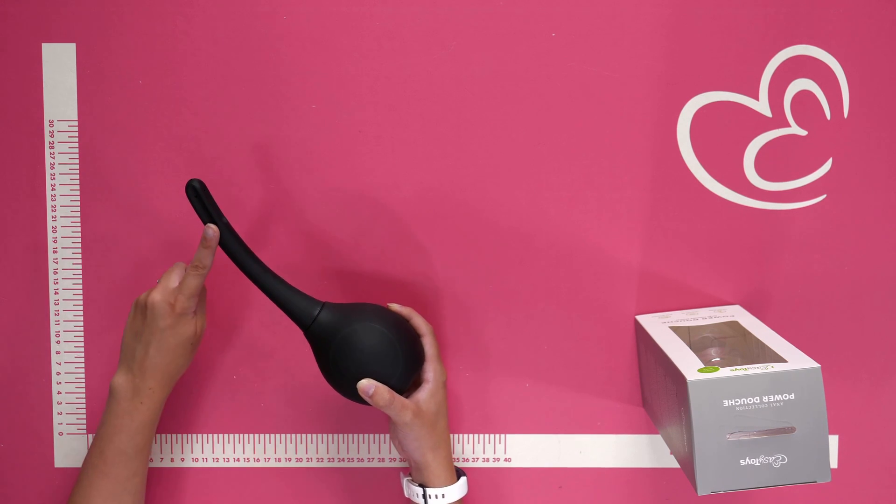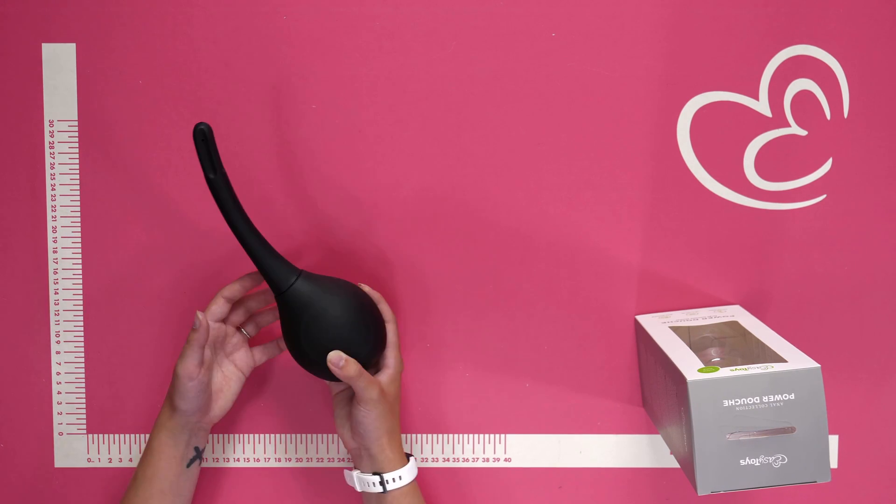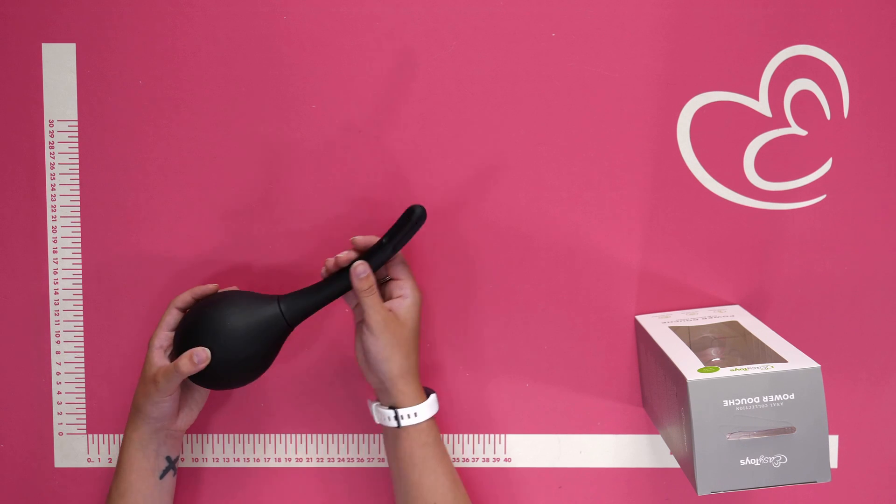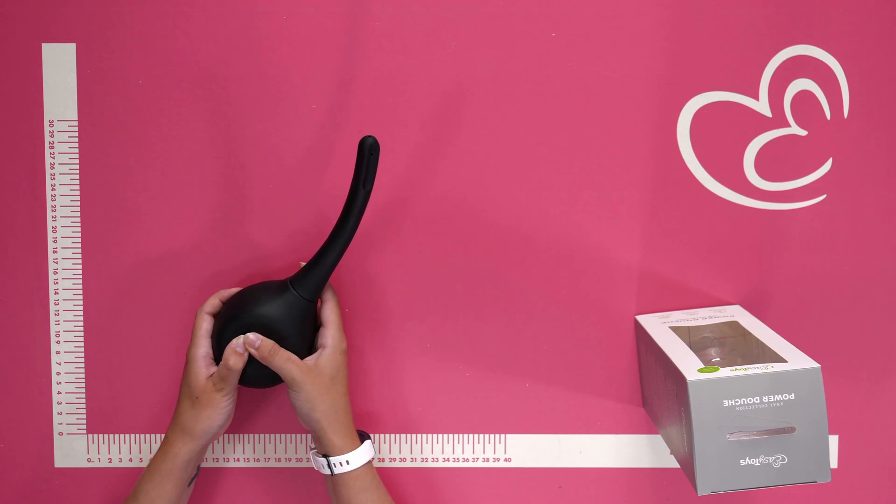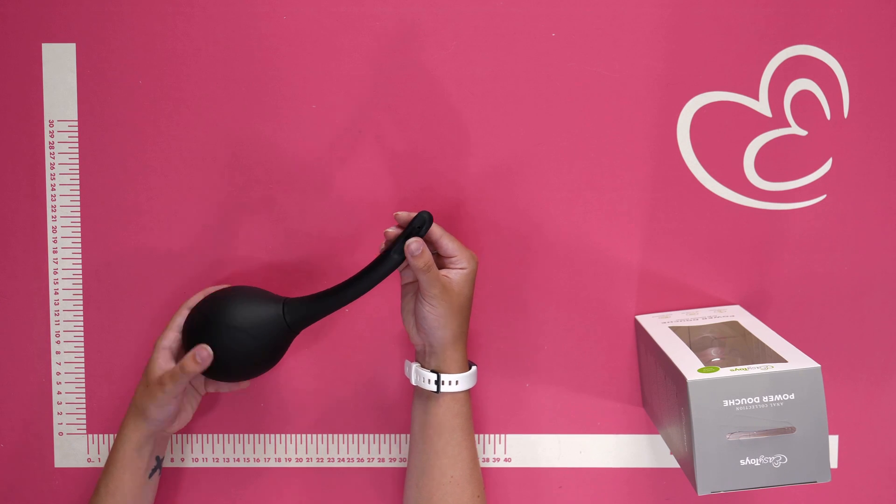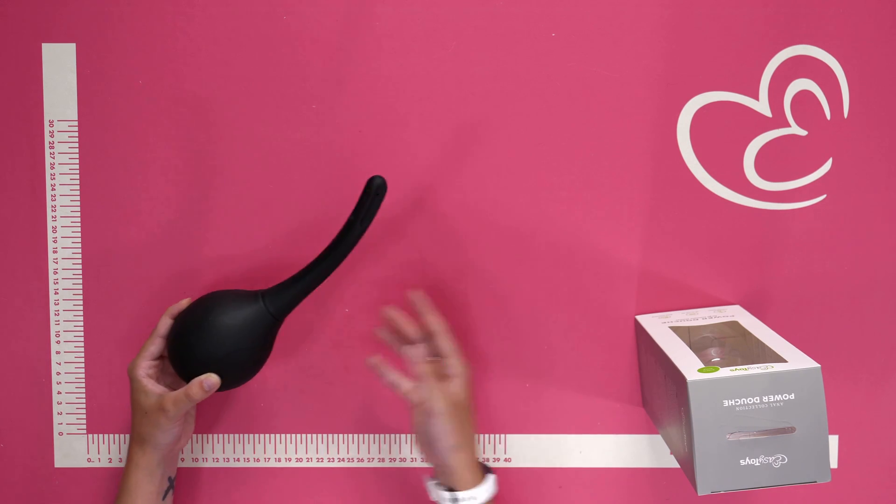Now this vaginal douche is made of PVC and it feels firm and smooth and it's also easy to clean after every use. The four openings at the top, just here, make sure your insides are thoroughly cleaned.